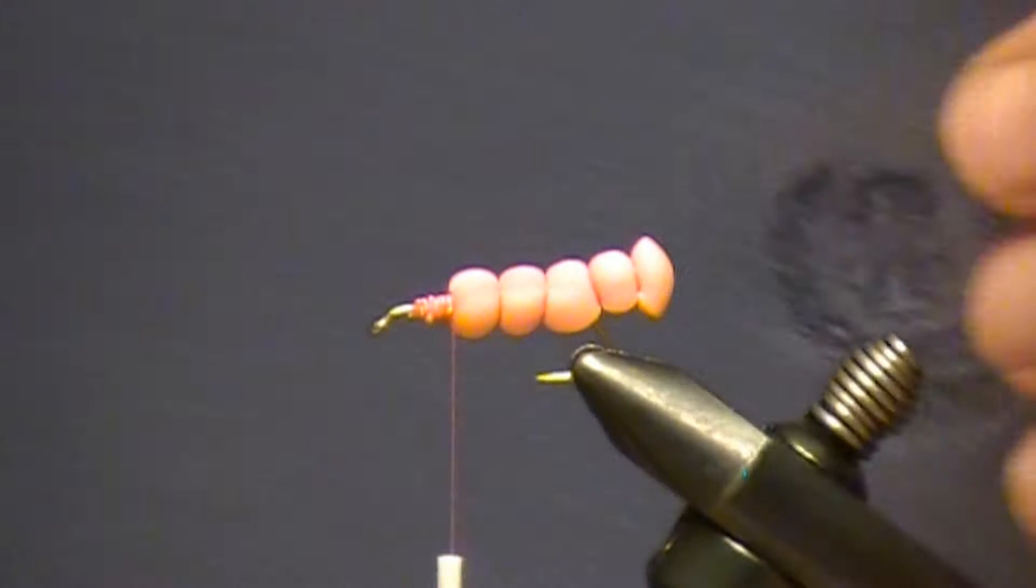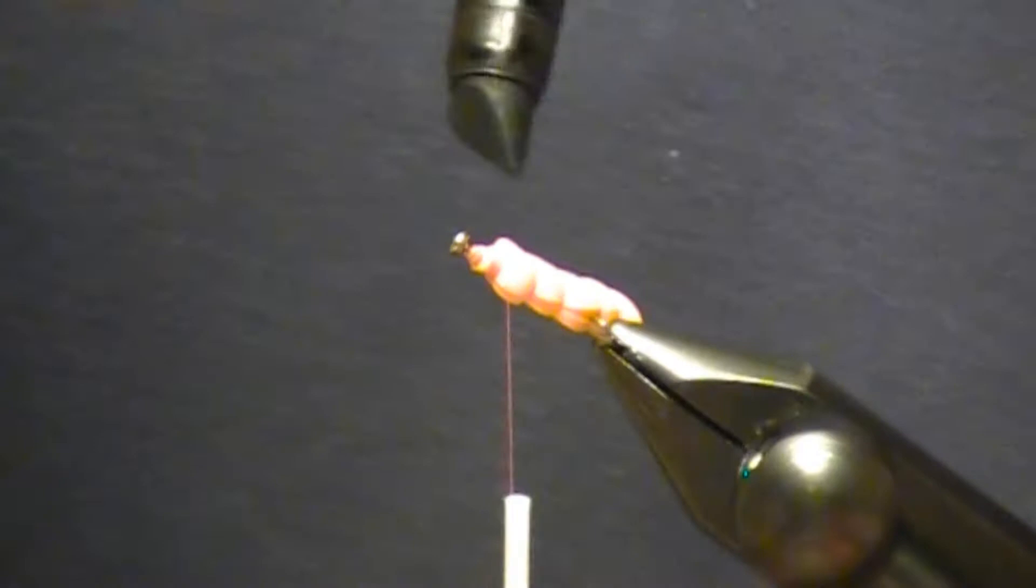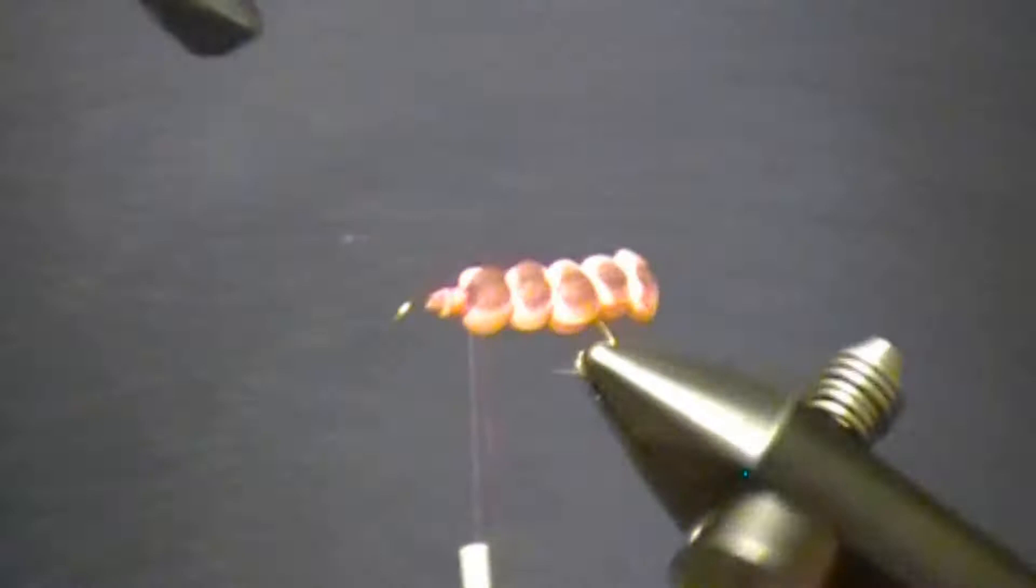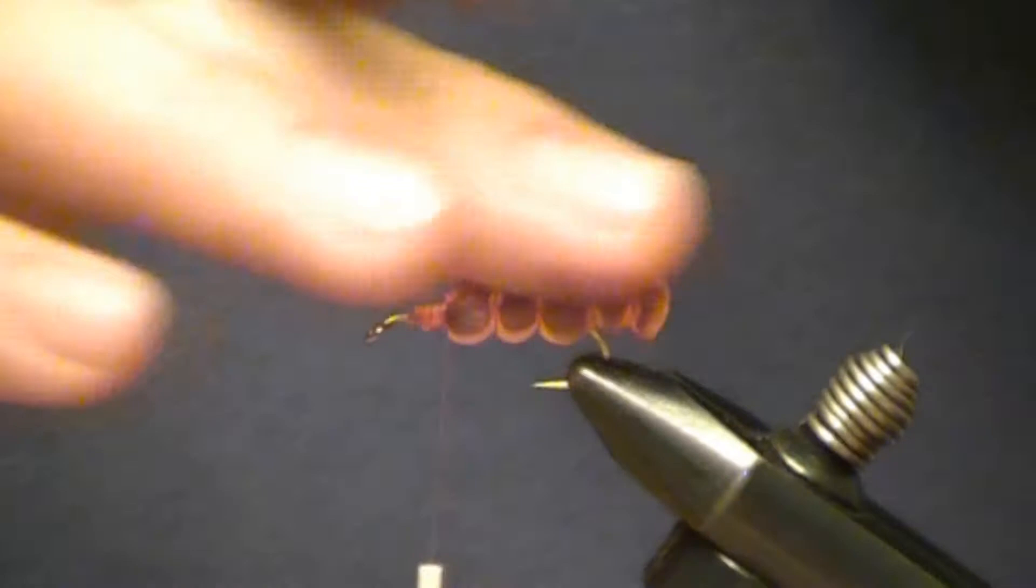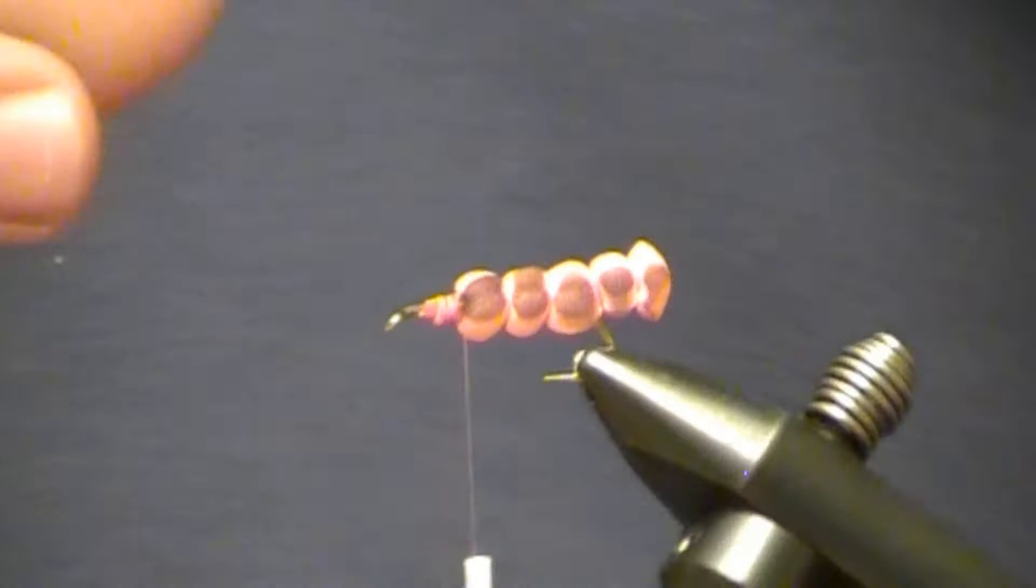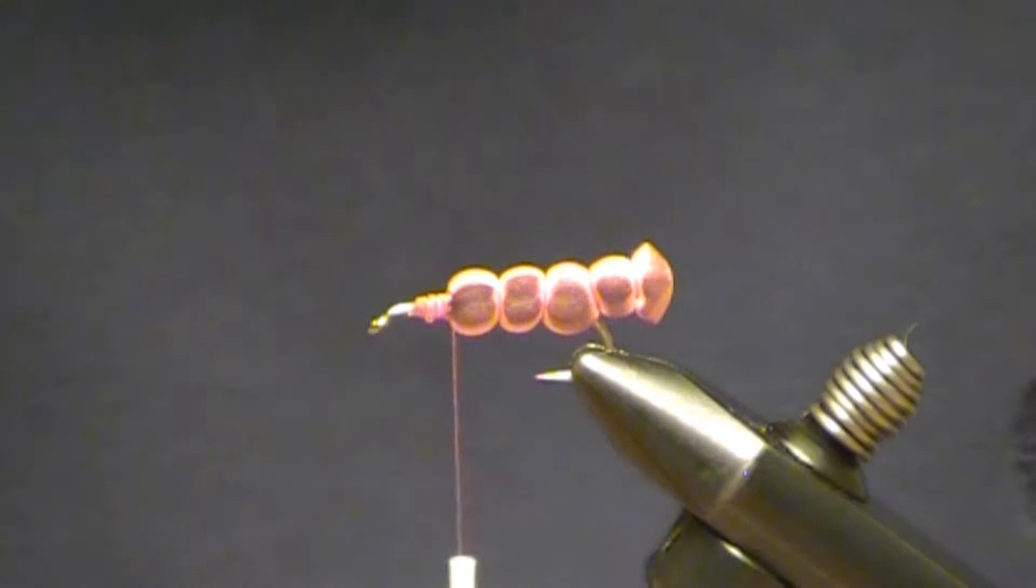And now I'm going to take my brown magic marker and dirty up this whole thing quite a bit. Rub it in with my fingers. If you look at the real stones, they're not typically real bright orange, they've got quite a bit of brown on them, so I want to make sure I mimic that. I don't like my stones to be too bright.